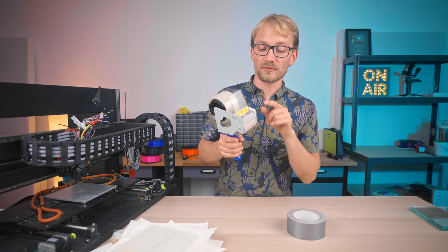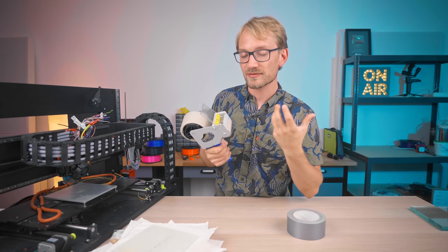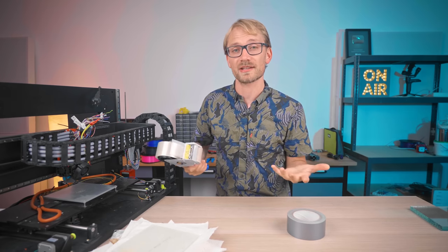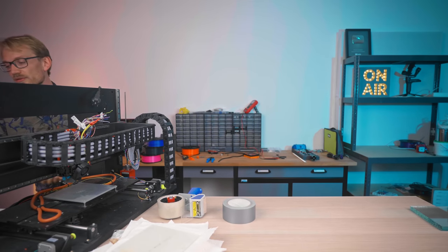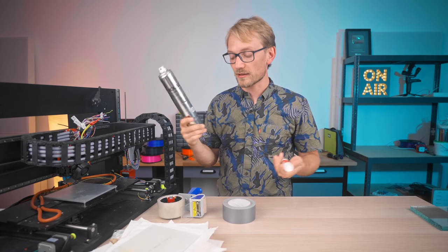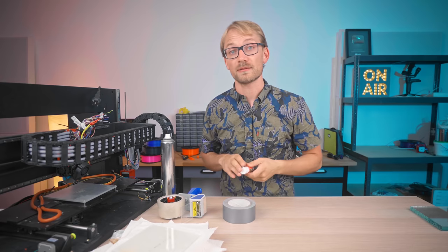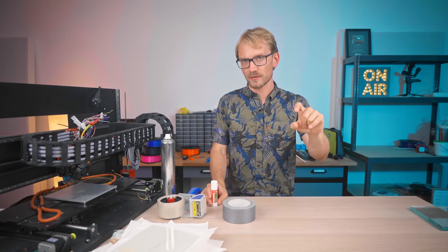I'm also going to throw in regular packing tape - this is a very thin PET film with an acrylic adhesive, kind of similar to some of the bed stickers you can buy. Some duct tape. And for comparison to tried and true solutions, we're going to do 3D lac as a hairspray-like coating, the glue stick that Prusa is shipping, and just a clean sheet of glass, at least for PLA.